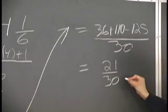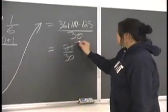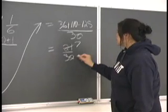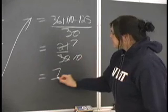And we look to see if we can simplify this, and we can because 3 goes into 21 seven times and 3 goes into 30 ten times. So our final answer is 7 tenths.